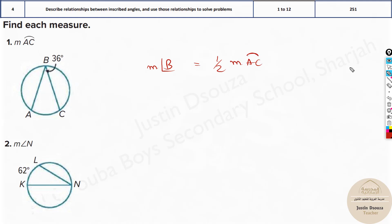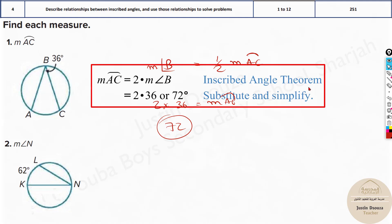So this is the arc. And now we need to find arc AC. Take this 2 to the other side. It will be 2 times the measure of angle B, that is 36. So that is the measure of arc AC. We get 72 degrees. That would be the answer. You can see that's the answer, 72.